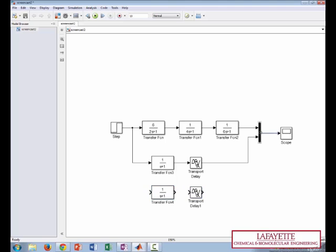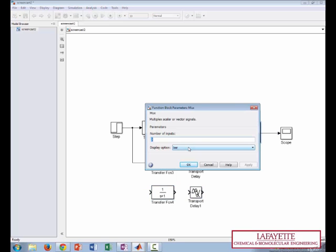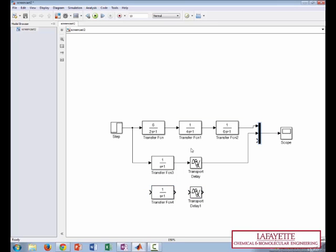We'll need an extra port on the MUX block for this new input. And then we have to connect it to the step. So let's make this top FOPDT a Taylor approximation and the bottom one a Skogestad approximation.